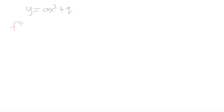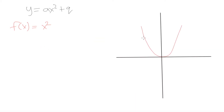The simplest quadratic function is going to be f of x is equal to x squared. The curve of f of x equals x squared looks something like this. There are a few things we can notice about this graph. The first thing is that it has this characteristic U shape, and it turns out that parabolic curves are going to have this kind of shape.